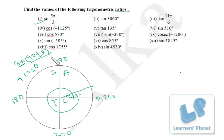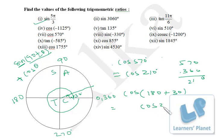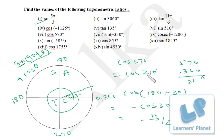Now let's calculate cos 570°. First deduct 360: 570 − 360 = 210°. So cos 570° = cos 210°. Now 210 = 180 + 30. When adding or subtracting from 180, cos remains cos. So cos(180 + 30) = cos 30, but we check the sign: 180 + θ is the third quadrant where cos is negative. So cos(180 + 30) = minus cos 30 = minus √3/2.